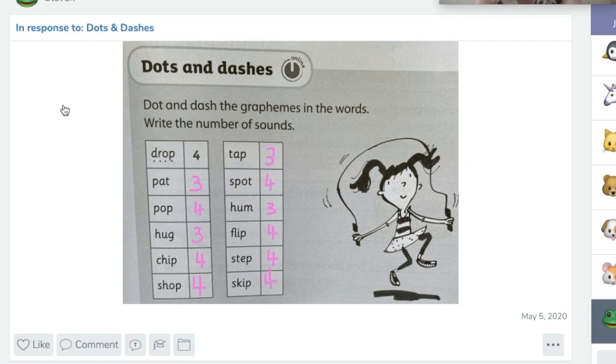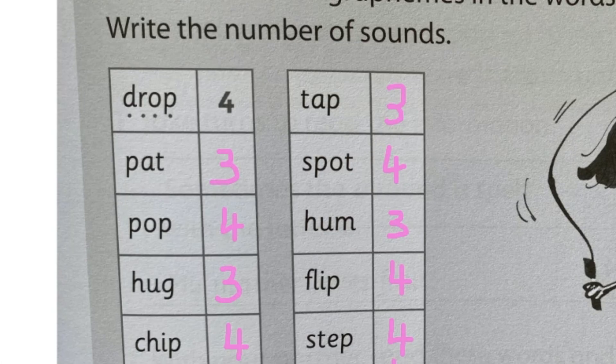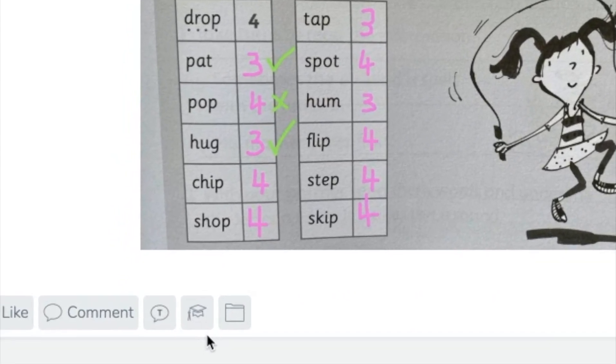Now that we've discussed editing student work and adding feedback by drawing on top of the work, I'm going to show you something else that's really useful for organising your students' work into skills. I've got here a piece of work from a student called Stephen who has responded to a task called 'Dots and Dashes,' which is a phonics activity looking at graphemes in words. Stephen has written over the top of the words and written down the number of sounds he can hear. The first thing I can do is edit the work and put ticks and crosses where he's gone wrong, and then I'll show you the small graduation hat button at the bottom of the screen — that's the skills button.